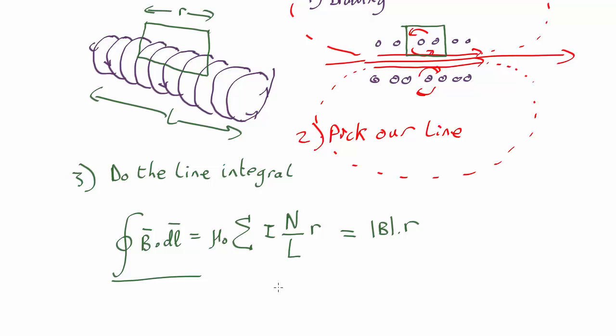So rearranging, we find that the strength of the magnetic field B, the modulus of it inside, is equal to—well the r's cancel out—so it's just going to be equal to μ₀in/l, where n is the total number of loops in the whole solenoid and l is the length of the whole solenoid. So n/l is the number of loops per unit length.